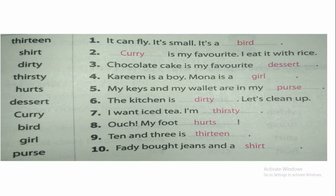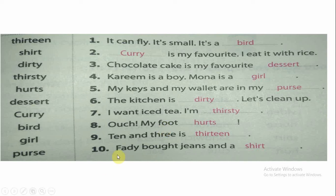Number one: It's a bird. Number two: Curry is my favorite food, I eat it with rice. Number three: Chocolate cake is my favorite dessert. Number four: Karim is a boy, Mone is a girl. Number five: My keys and my wallet are in my purse. Number six: The kitchen is dirty, let's clean up. Number seven: I am thirsty. Number eight: My foot hurts. Number nine: Ten and three is thirteen. Number ten: Fadi bought jeans and a shirt.